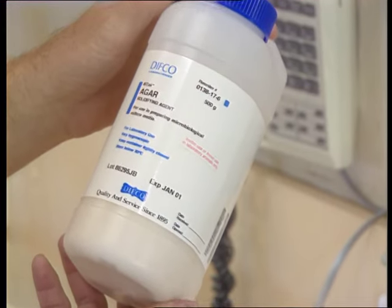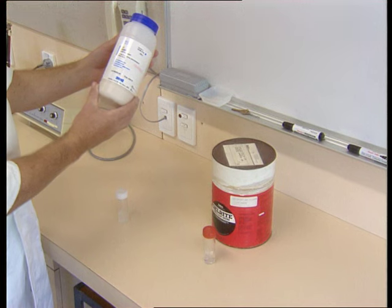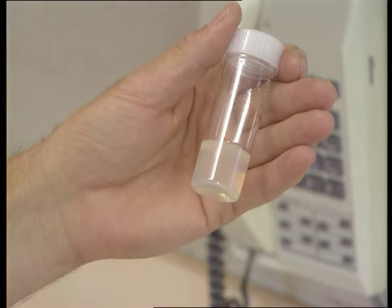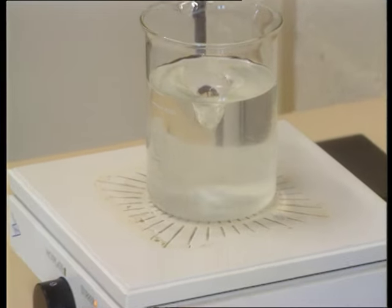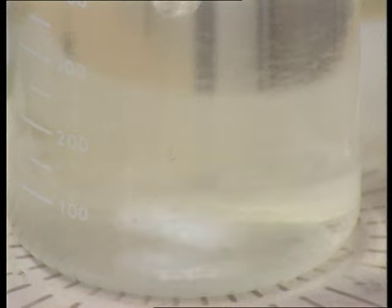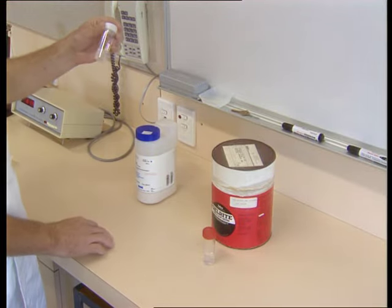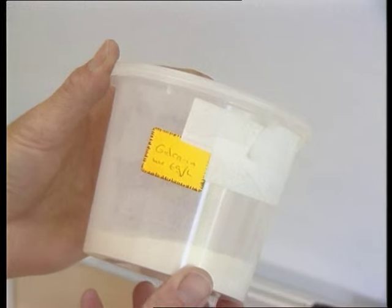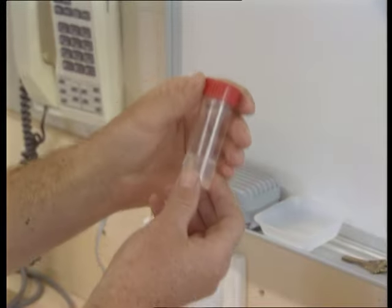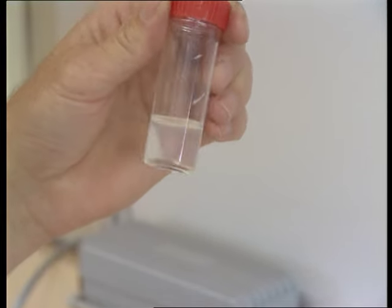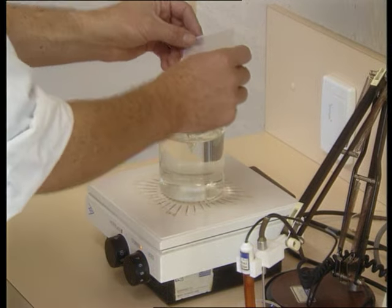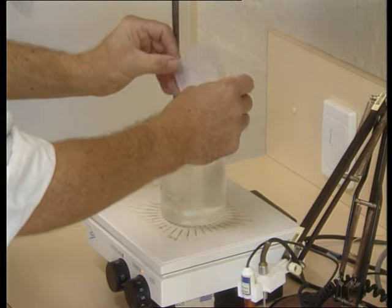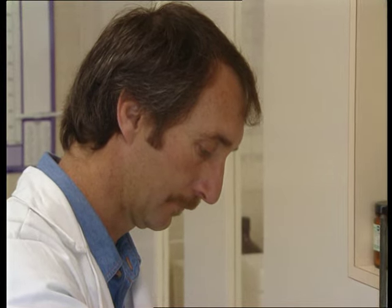The gelling agent is then added. Various gelling agents can be used: agar, extracted from the cell walls of red algae, produces an opaque gel and is dissolved on a hot plate with magnetic stirrer. Gelrite, from the bacterium Pseudomonas elodea, and gel cream from cultivated red algae, produce a clear gel and can be dispensed as long as the mixture is kept in suspension by constant stirring; otherwise the gelling agent settles to the bottom, resulting in a non-homogeneous batch of medium.